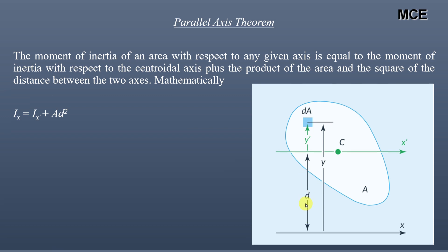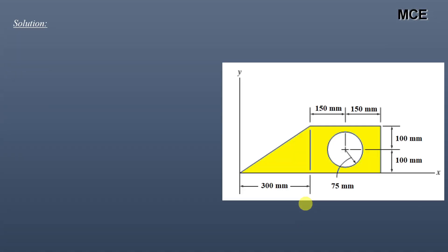Now let us solve the problem. To find the moment of inertia of this composite shape about the y-axis, we will divide this figure into three parts: the first is the rectangle of width 300 mm and height 200 mm; the second is the circular portion of radius 75 mm; and the third is the triangular portion with base parallel to the y-axis of 200 mm and height of 300 mm.